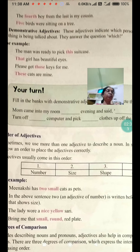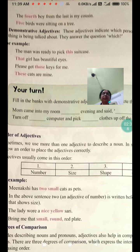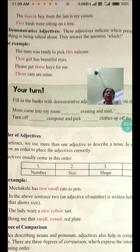'The fourth seat from the last is my cousin.' 'Five birds were sitting on a tree.' Fourth and five are all adjectives of number.